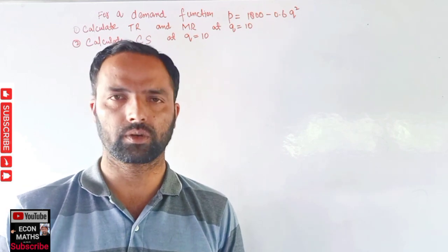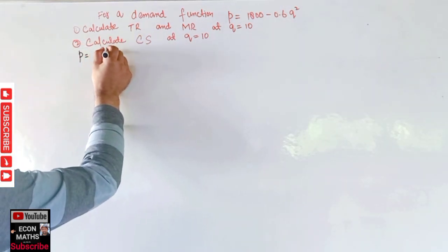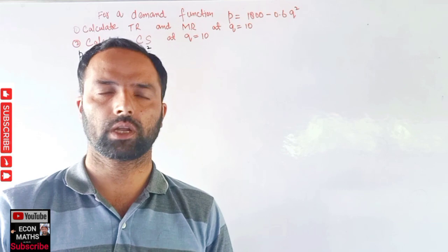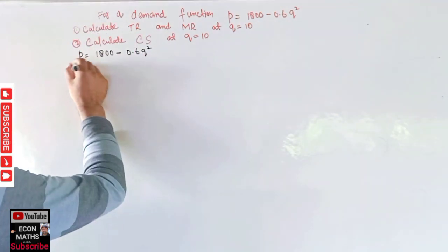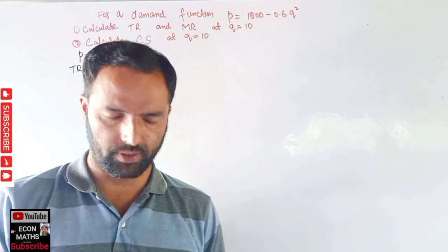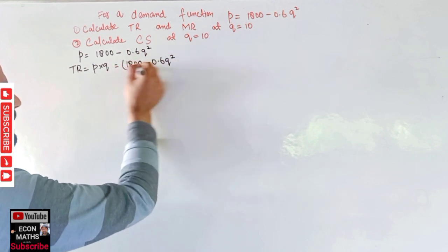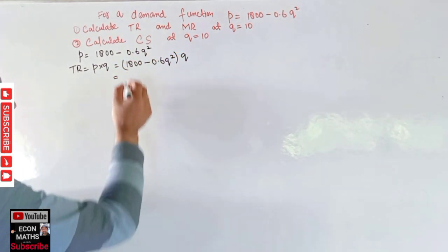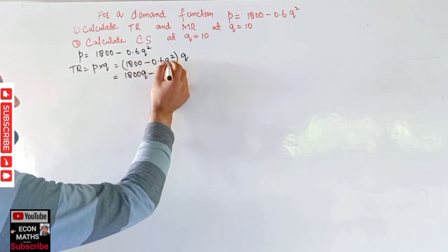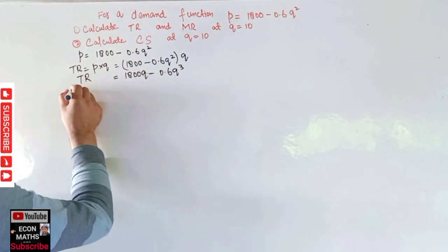First we will form the total revenue function. We are given p = 1800 - 0.6q². This is our inverse demand function. Total revenue is simply price times quantity, so we multiply our inverse demand function by q: TR = (1800 - 0.6q²) × q, which gives us TR = 1800q - 0.6q³. This is our total revenue function.